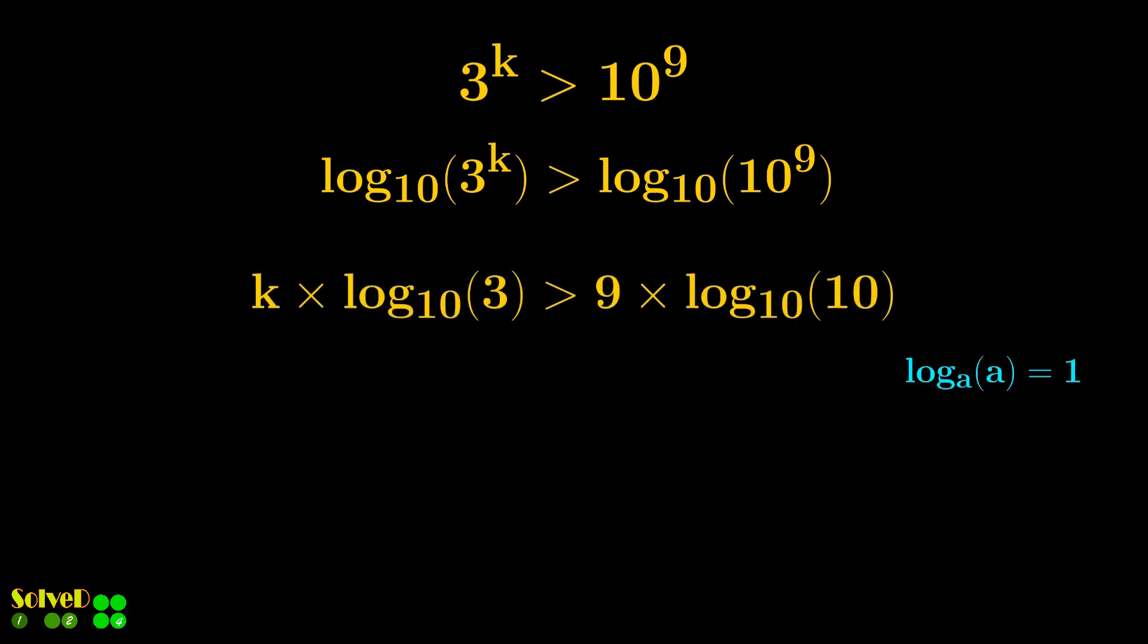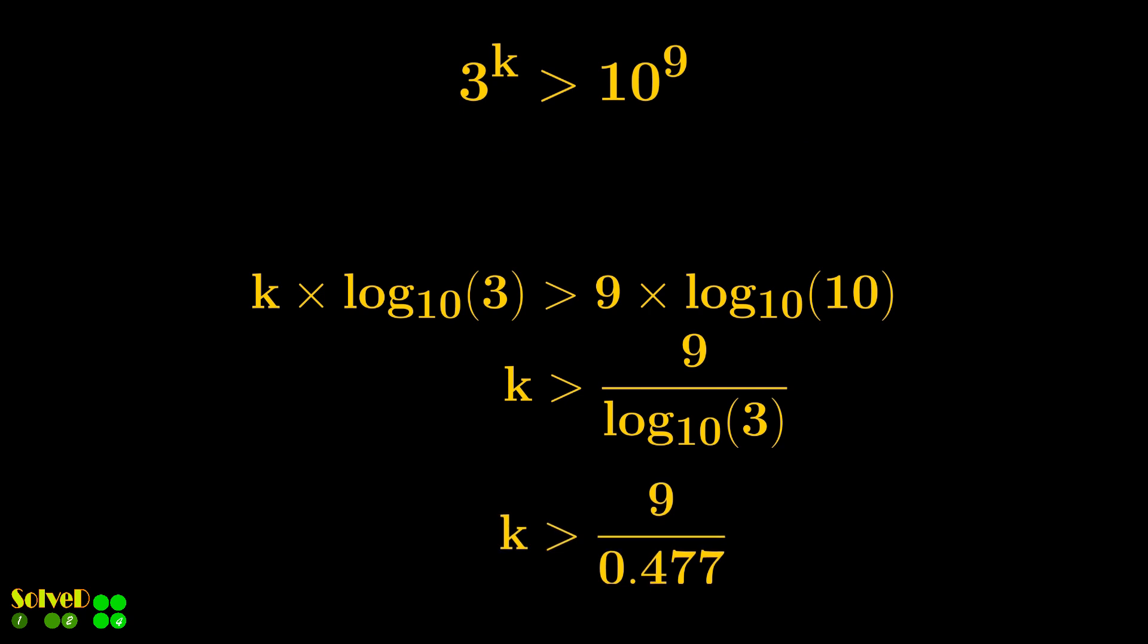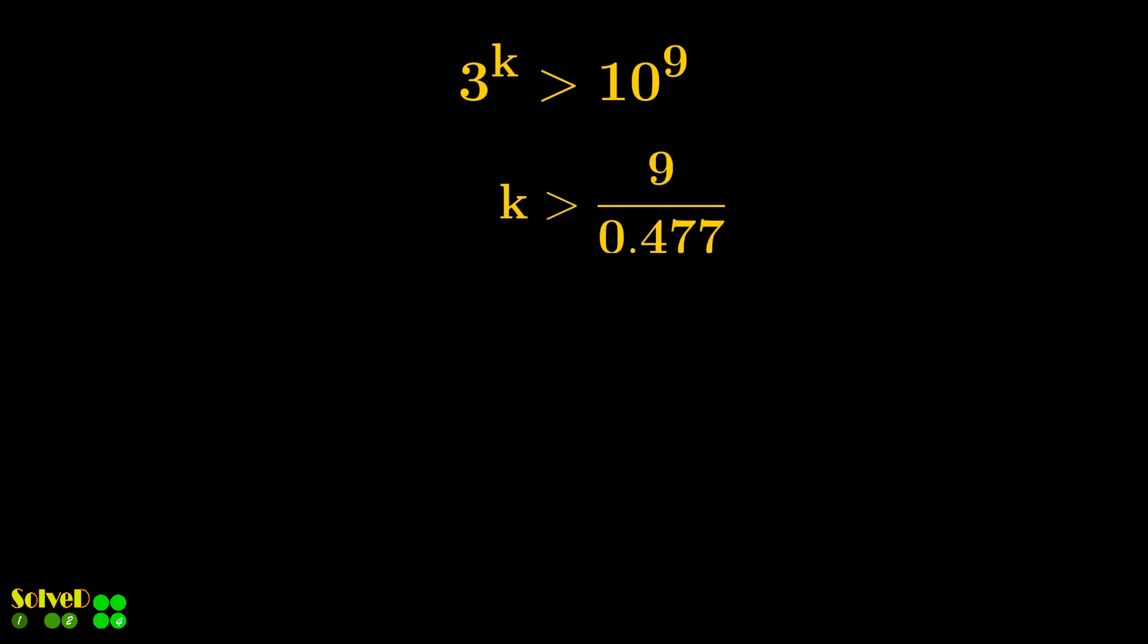Use the same property for the right hand side. Now simplify. So K is greater than 18. Therefore, 19 is the required first step when blue triangles will exceed the given value.